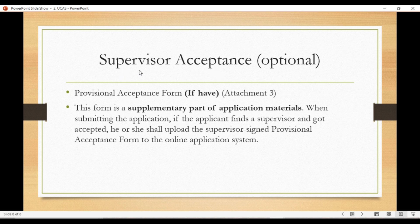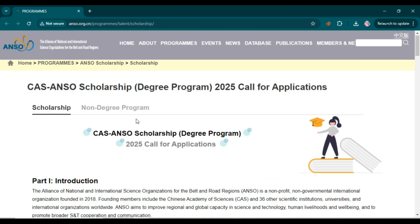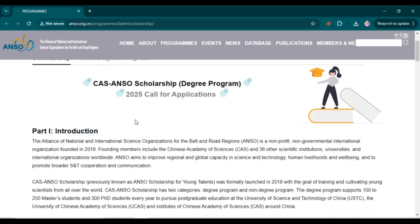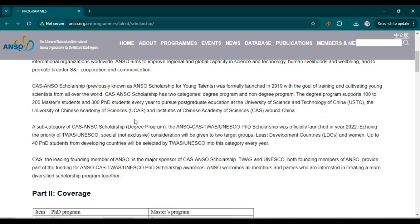After getting supervisor acceptance, you will receive a provisional acceptance form from the professor. This form is a supplementary part of the application material when submitting. If the applicant finds a supervisor and gets accepted, then the applicant uploads the supervisor-signed provisional acceptance form to the online application system. Having supervisor acceptance is a strong plus point for this scholarship. Now let's talk about how to apply — this is the official website.